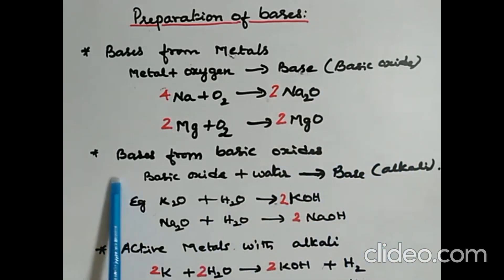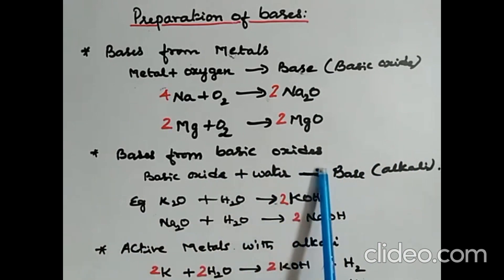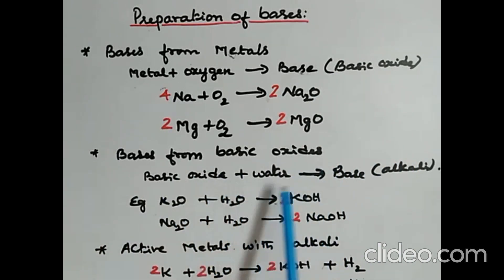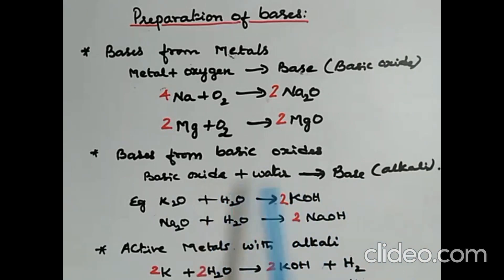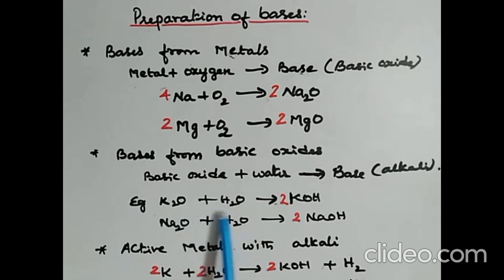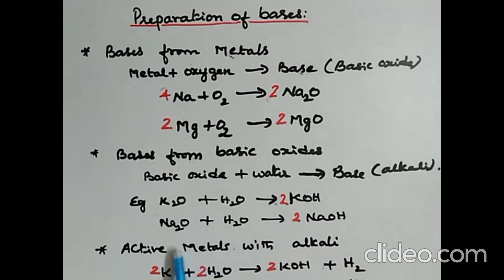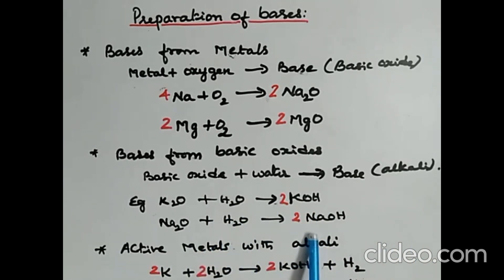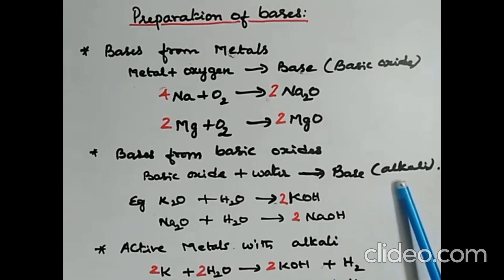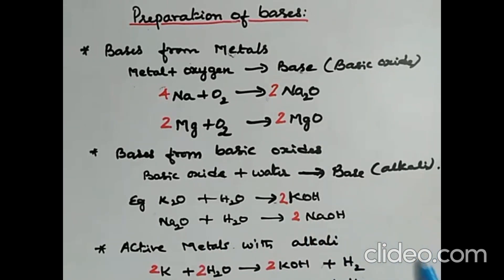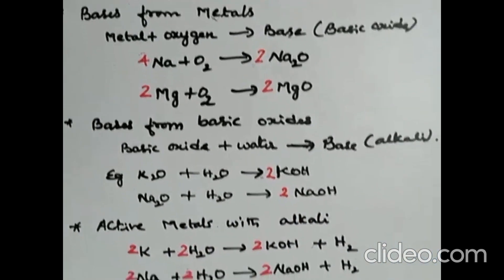The next method is bases from basic oxides. Basic oxide plus water gives a base which is an alkali — water soluble bases are called alkalis. Example: potassium oxide combined with water forms potassium hydroxide, which is an alkali. Sodium oxide plus water gives sodium hydroxide, which is also an alkali.